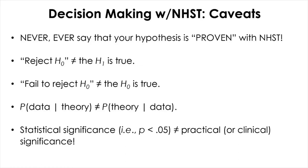The probability that you will observe a certain data set given the theory is true is not the same as the probability that the theory is true given a certain data set. You cannot flip them back and forth to mean the same thing — they are not necessarily the same. You always have to remember that the absence of evidence is not the same as the evidence of absence.